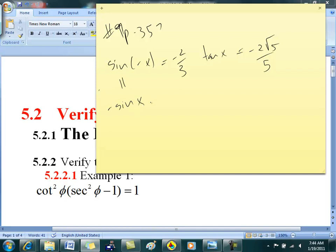So if negative sine x equals negative 2 over 5 or 2 over 3, what's sine x equal to? 2 over 3. And tangent is negative. So which quadrant is the angle in? Who said 4?